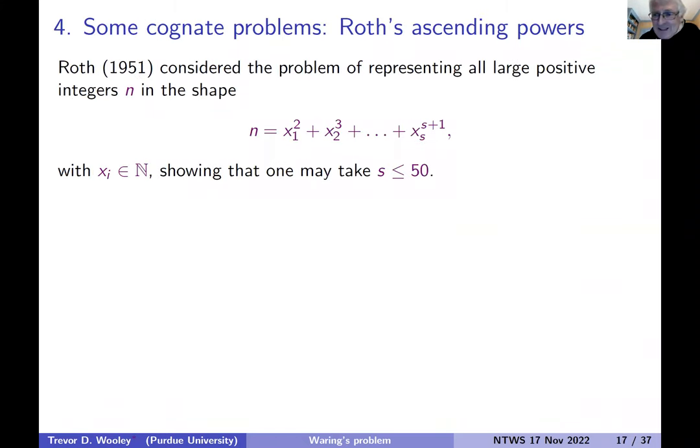So let's carry on. How about some other applications? Here's another application: Roth's ascending powers problem. So Roth looked at the problem of representing integers as sums of a square, a cube, and so on. I think it was a master's thesis. There's an interesting story to this, which would take too much time to tell. But anyway, the story Roth can tell us at a different point, maybe. So Roth managed to show that you can do this with at most 50 summands.